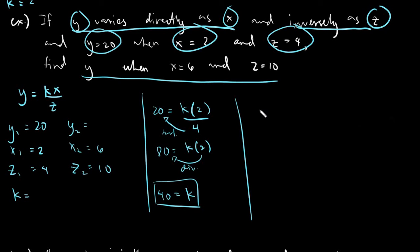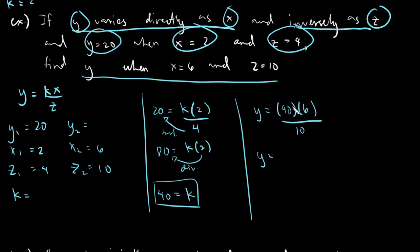Now we go to the second set. Our k is 40, y is unknown. y is equals to 40 times 6 divided by 10. 40 divided by 10 is 4, and 4 times 6 gives us 24. So y is equals to 24.